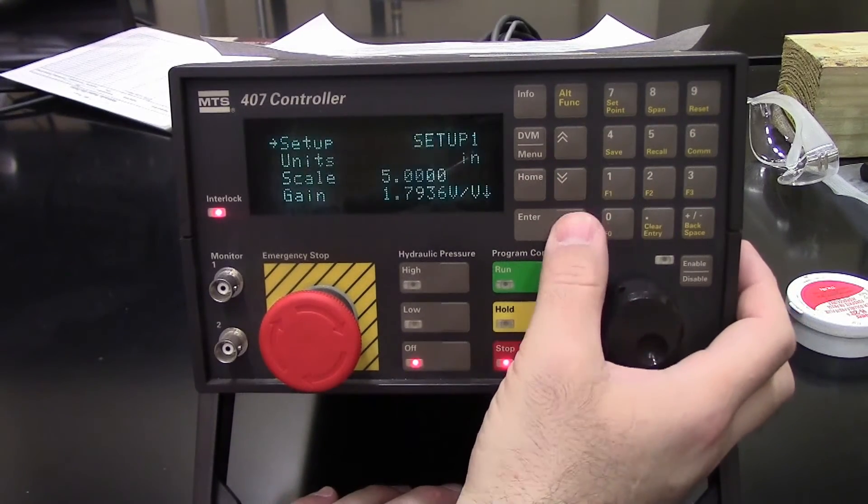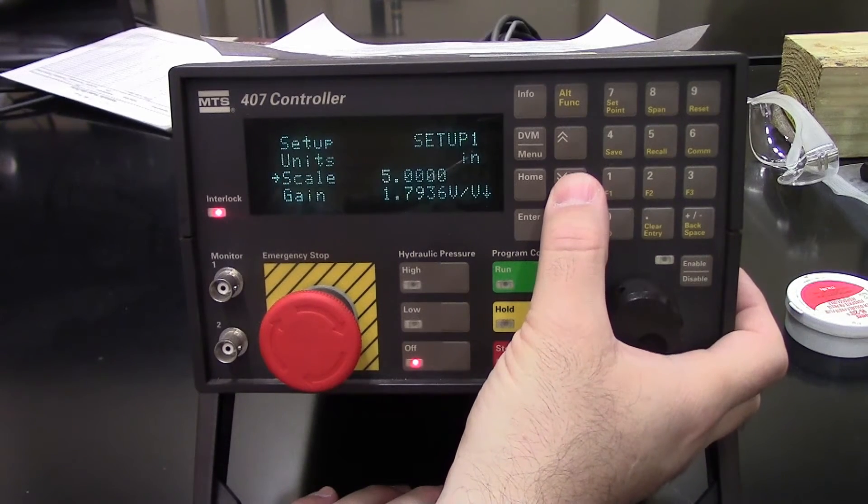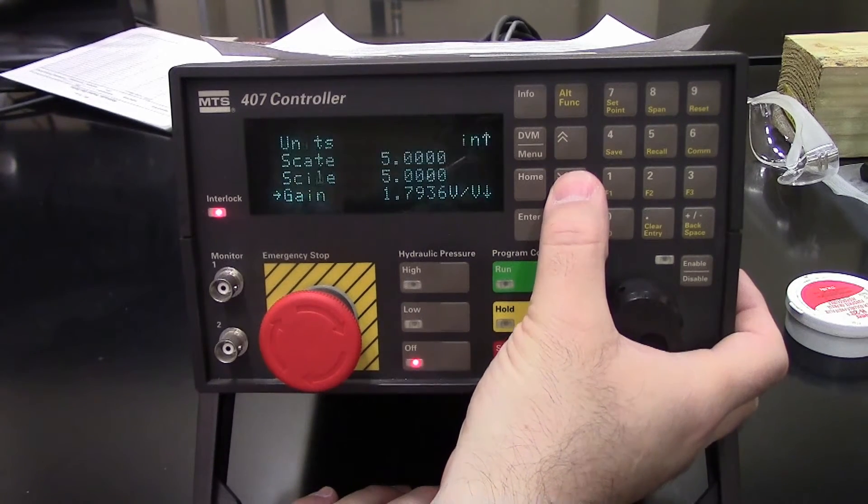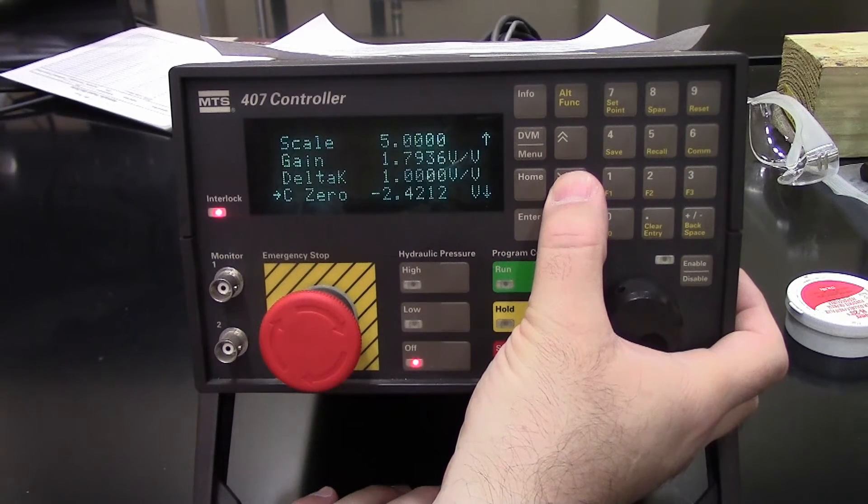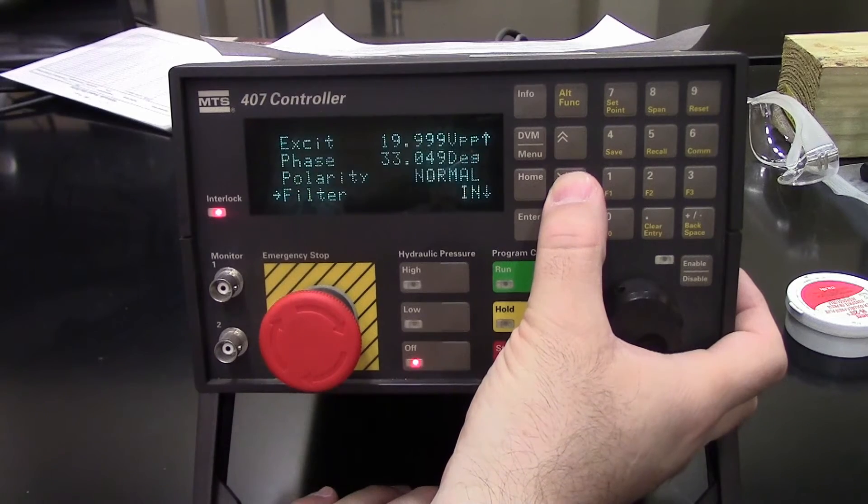AC1 conditioner. This is in setup 1. It has our units. Five inch full scale. It has the gain, the delta K, and the course zero. This would depend on your calibrations. Here's the excitation and phase and polarity.